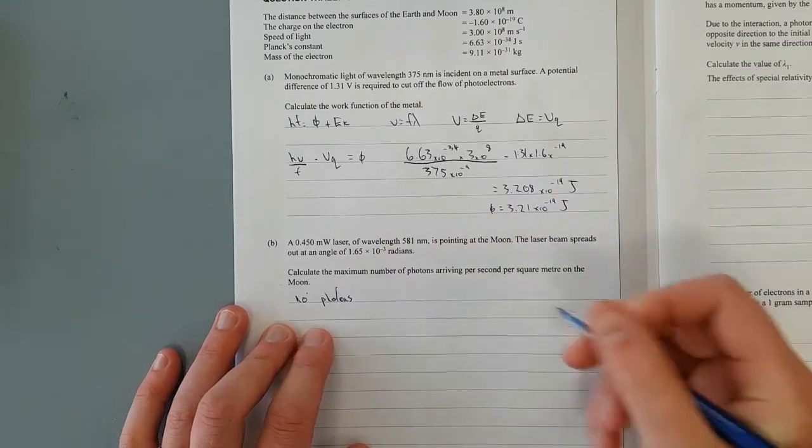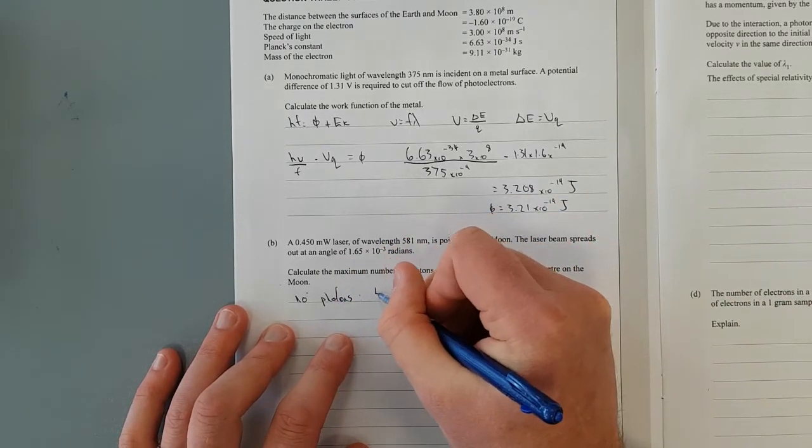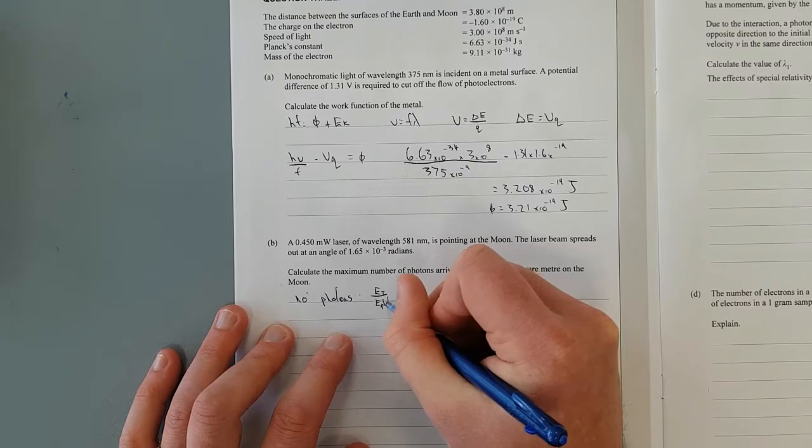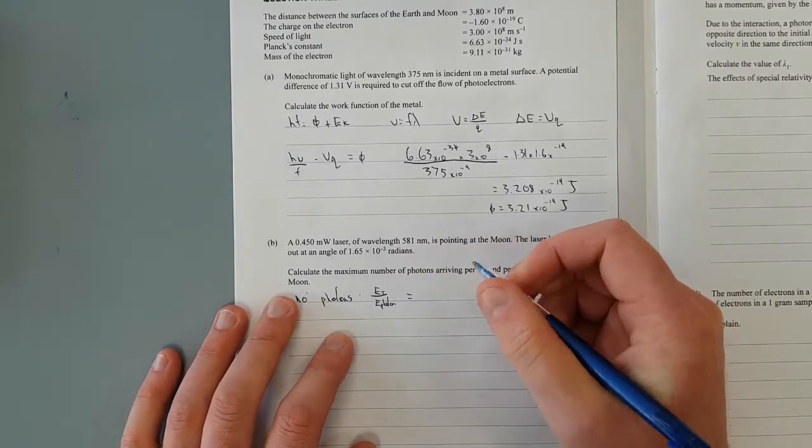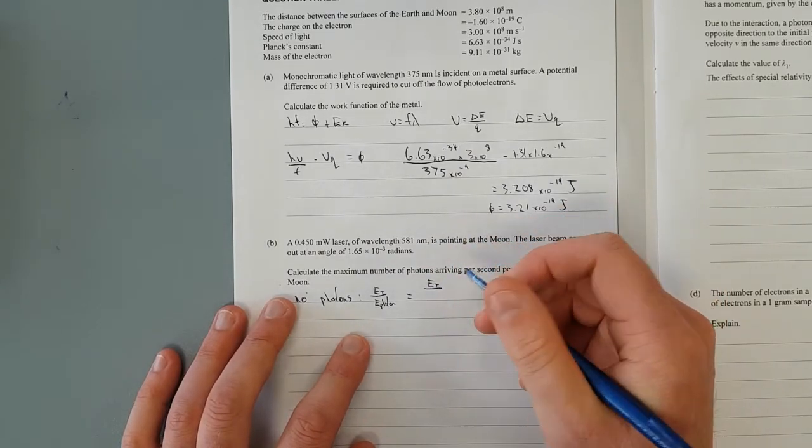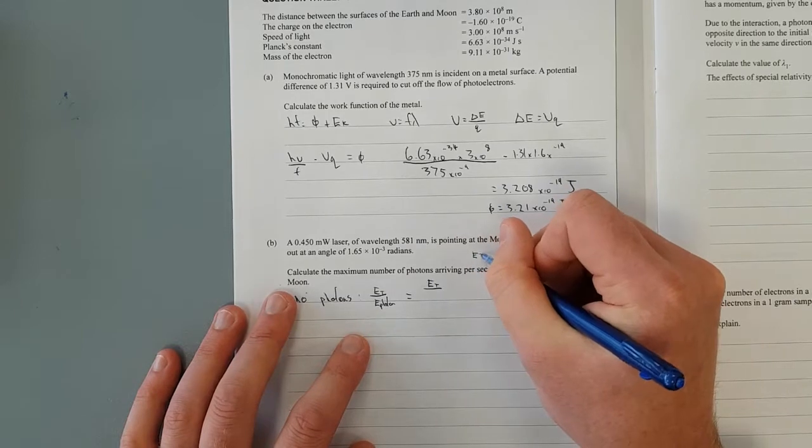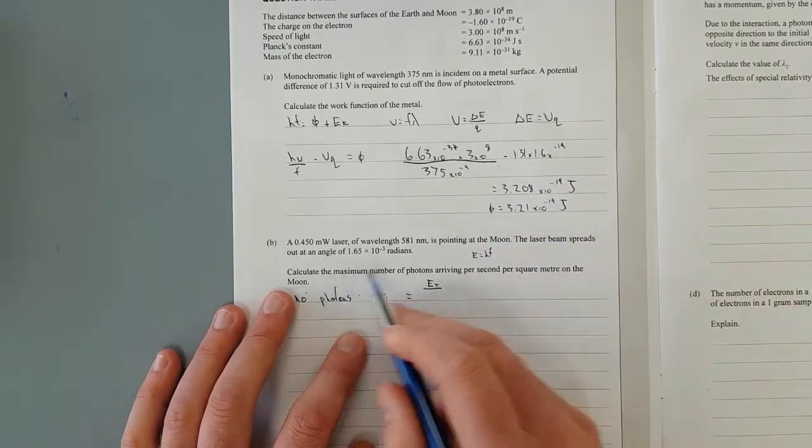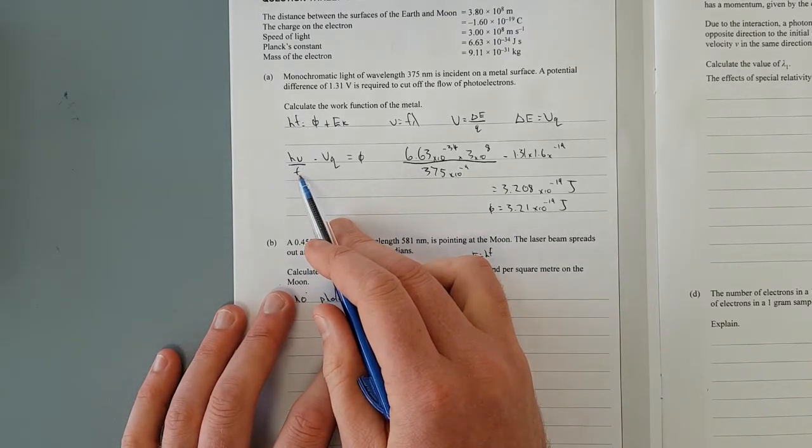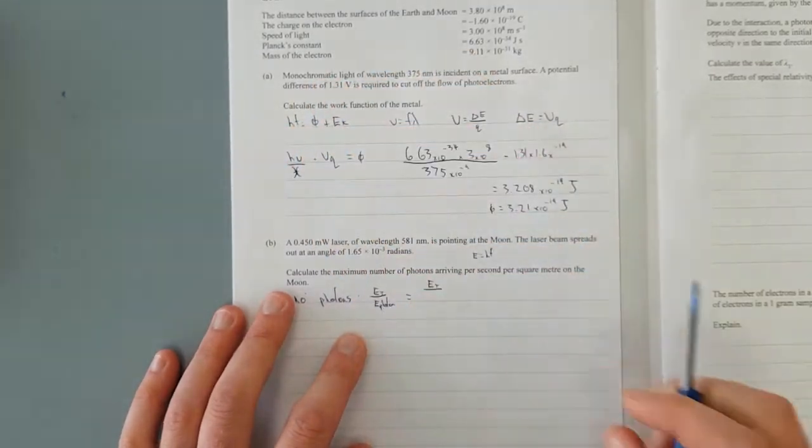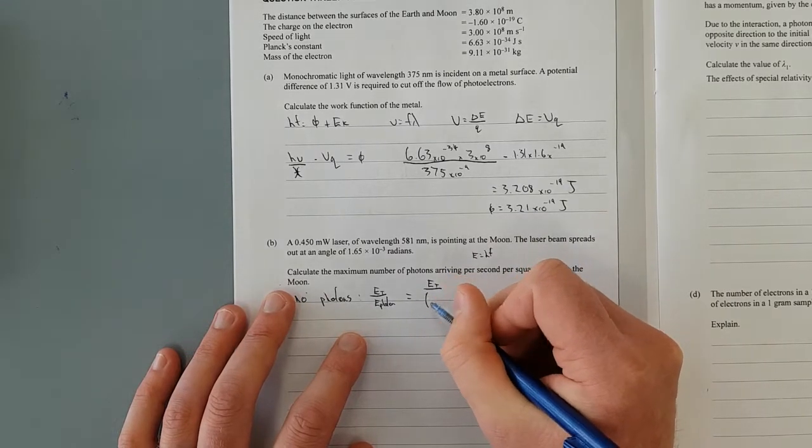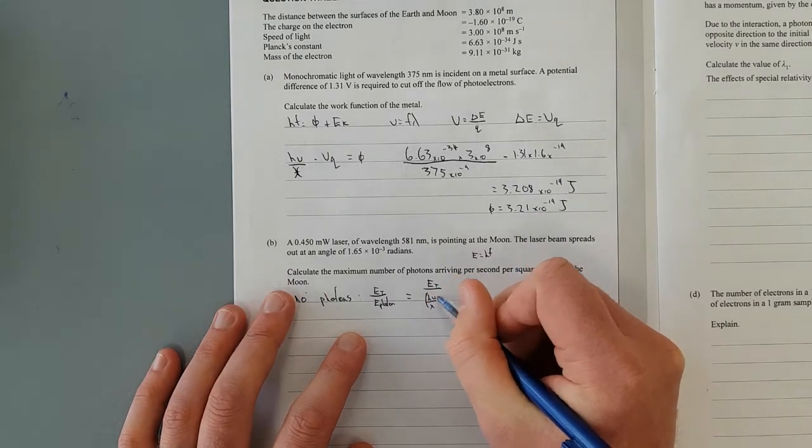How are we going to do this? We'll find out the number of photons coming out of the laser for a start. Number of photons, that is going to be the total energy ET divided by the energy of each photon. That'll give you the total number, which is ET divided by HF. Energy is just equal to HF, but we don't have the frequency, we've got the wavelength, so we'll just rearrange, so it gives us V over lambda.